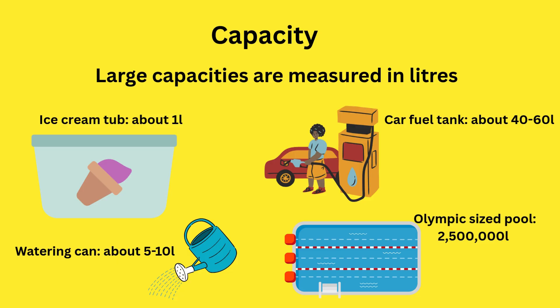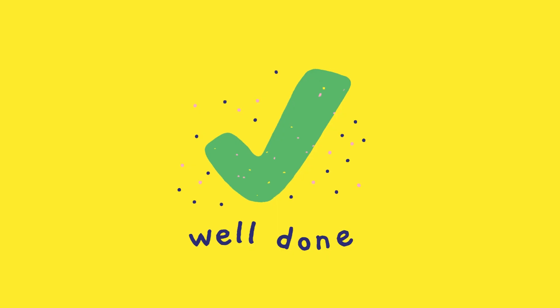Large capacities are measured in liters. An ice cream tub is about 1 liter. A watering can about 5 to 10 liters. A car fuel tank about 40 to 60 liters. And an Olympic sized swimming pool is around 2,500,000 liters. Well done everyone!